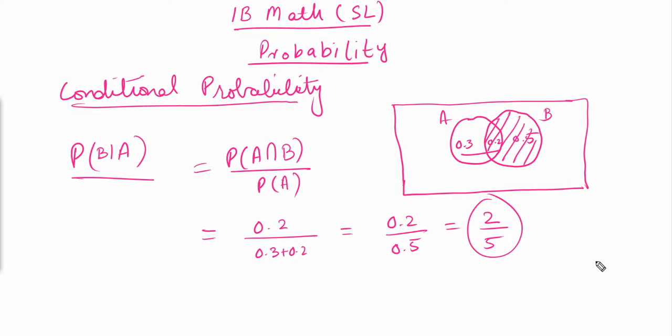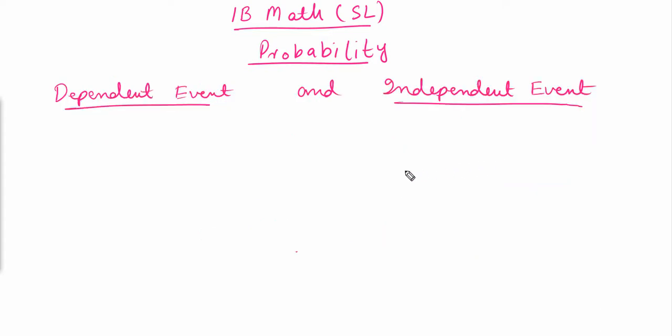There's another concept related to conditional probability: dependent and independent events. Two events are dependent if the happening of one event affects the probability of the other. Two events are independent if the happening of one event does not affect the happening of the other.